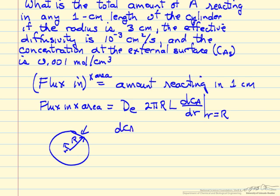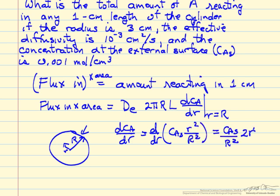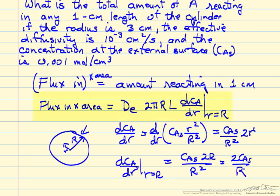The derivative of concentration with respect to r: since concentration depends on r², we have dCA/dr = d/dr(CAs·r²/R²) = CAs·2r/R². Evaluated at r=R, this gives dCA/dr|r=R = 2CAs/R.